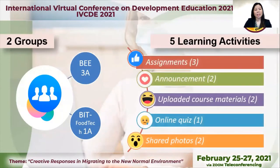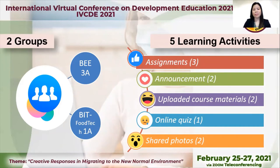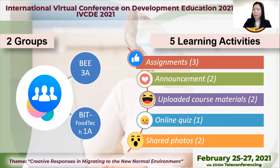In the study, the instructor created two Facebook groups — one for the Bachelor of Elementary Education 3A and the other for the Bachelor of Industrial Technology Food Tech 1A. The instructor assigned five learning activities to each group: assignments, announcements, uploaded course materials, online tweets, and shared photos. The level of students' engagement was based on participation in the assigned learning activities — reacting, commenting, responding to online tweets, and seeing posts containing the five different learning activities. Activities were performed asynchronously online by the students at their own pace.